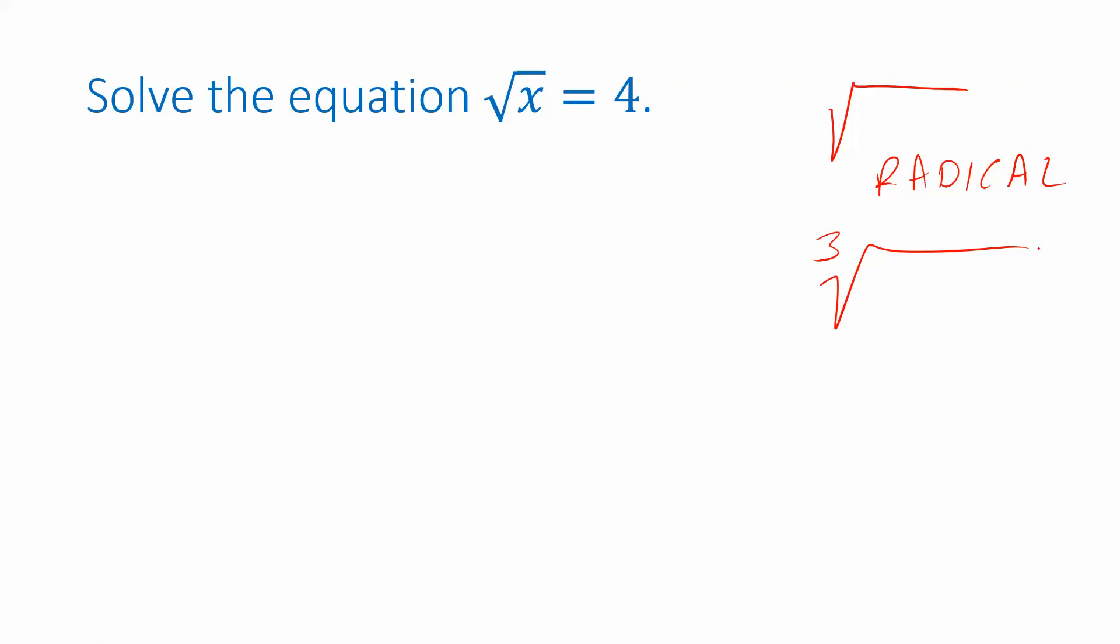But you're going to approach them the same way we do this one. The idea is to isolate the variable, which is inside the radical symbol, or underneath it. We need to do the opposite operation. So if this operation is a square root, the opposite operation, the one that would undo it, is to square. So we will square both sides of the equation.